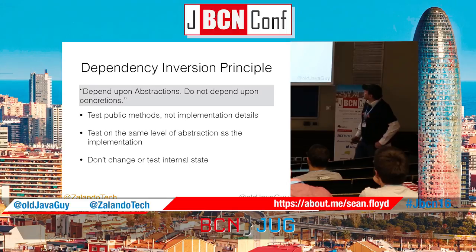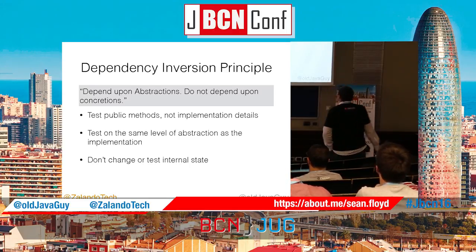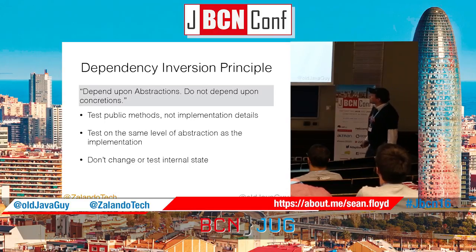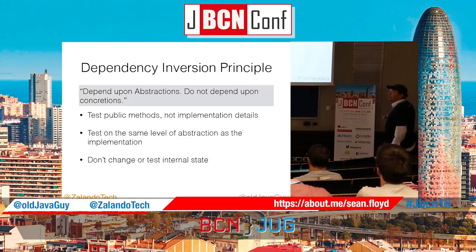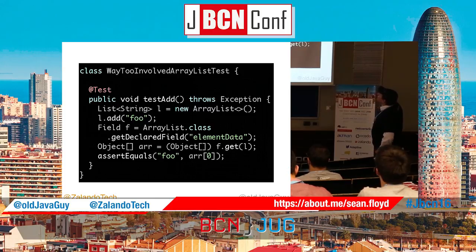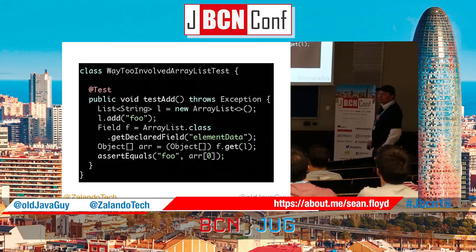The Dependency Inversion Principle says: depend upon abstractions, do not depend upon concretions. You should deal with the public facade of your class and not the internal details. For that reason, you should always test public methods and not implementation details. Try to test on the same level of abstraction as the implementation and don't change internal state. I'll show examples later where I violate that principle, but you have to have principles first in order to violate them.